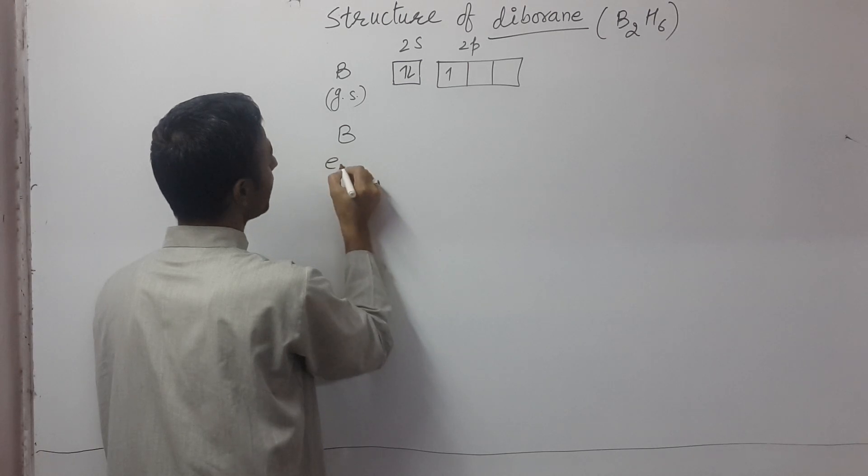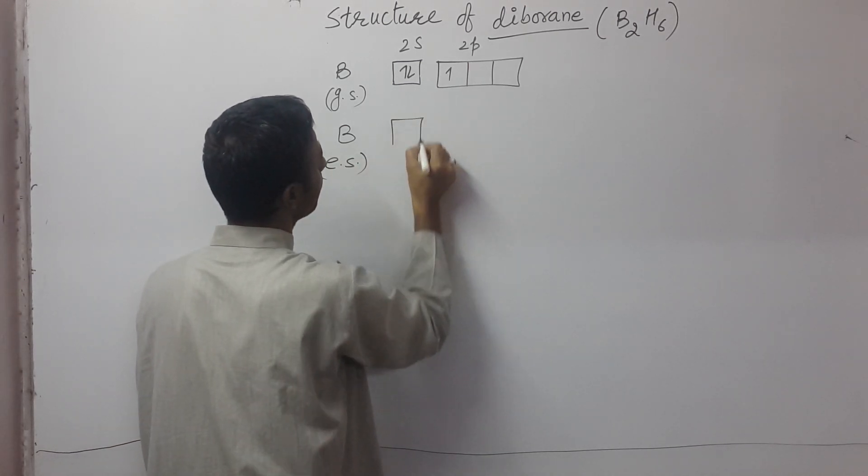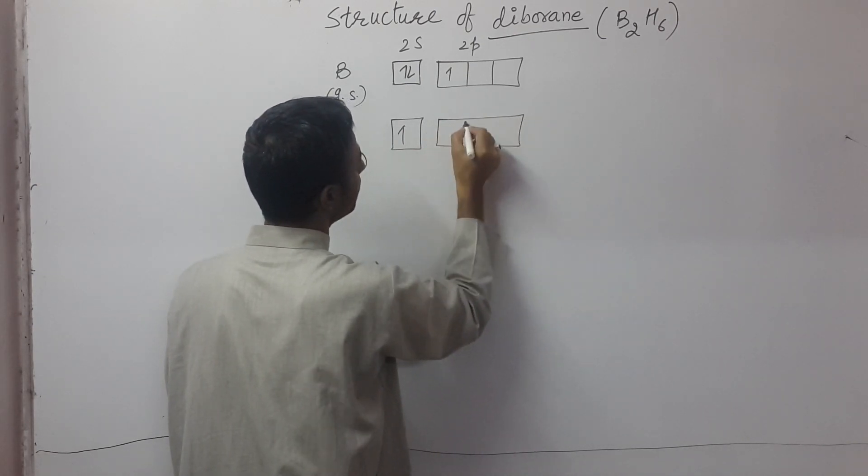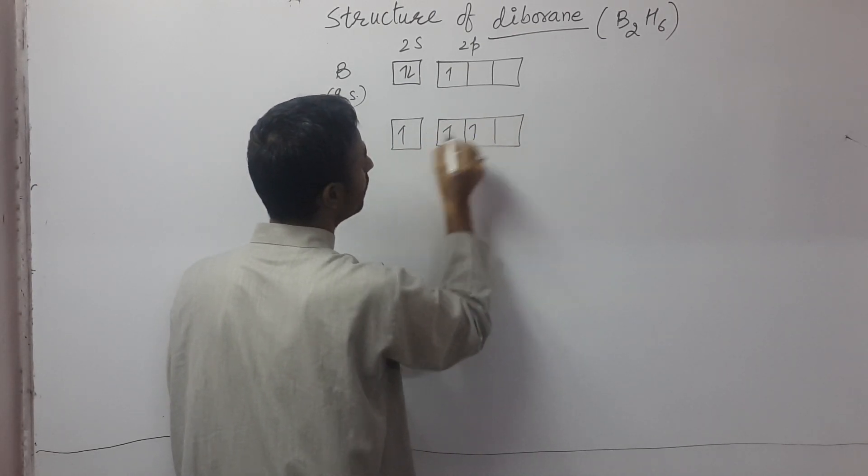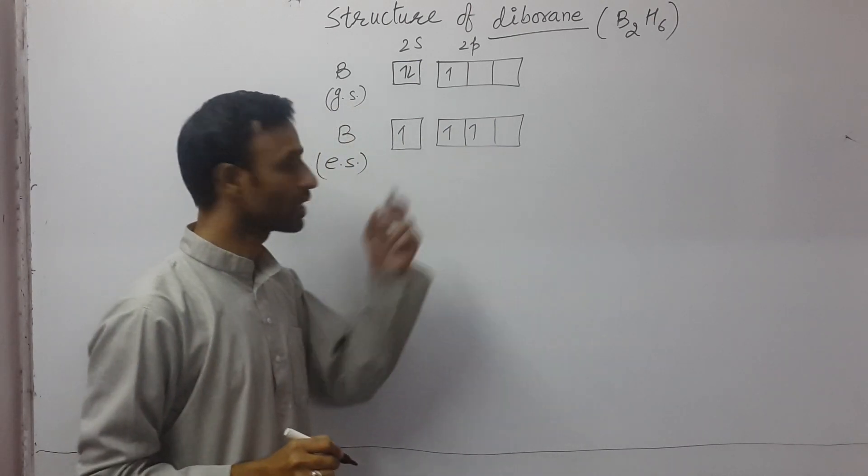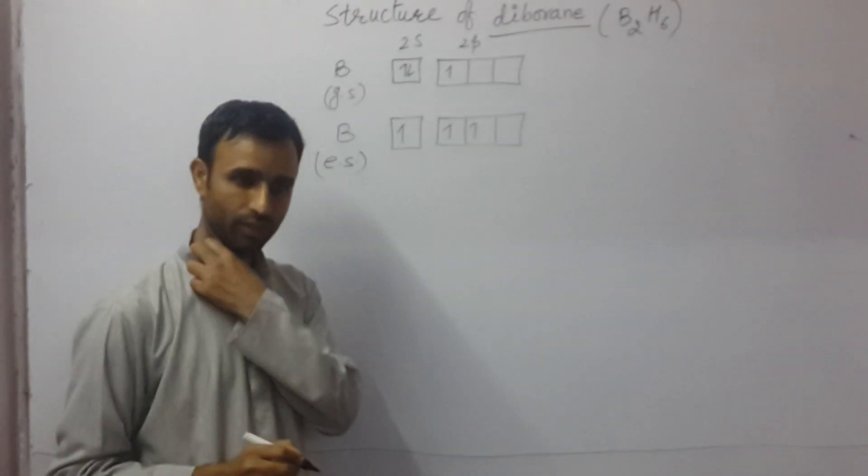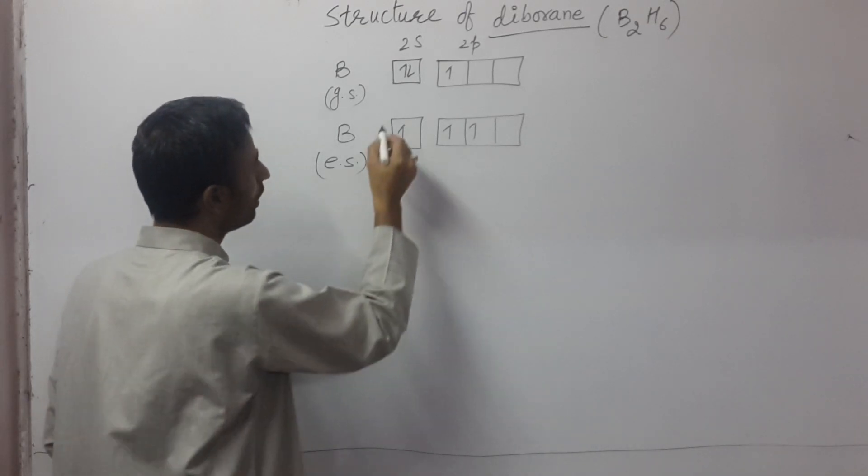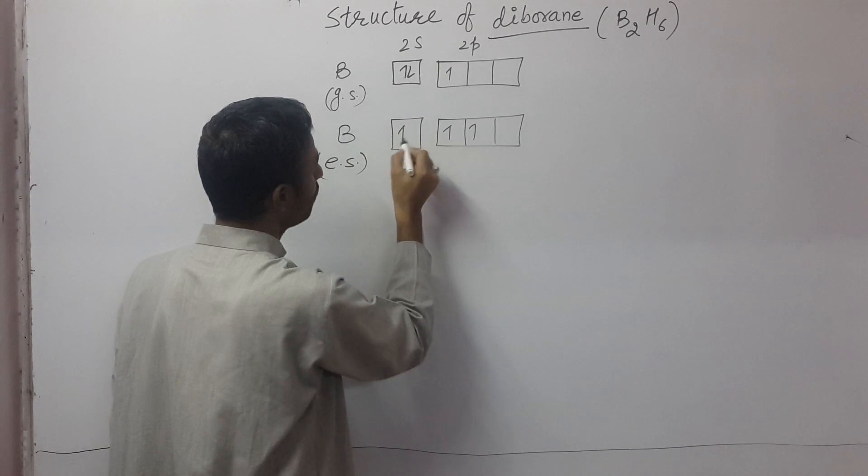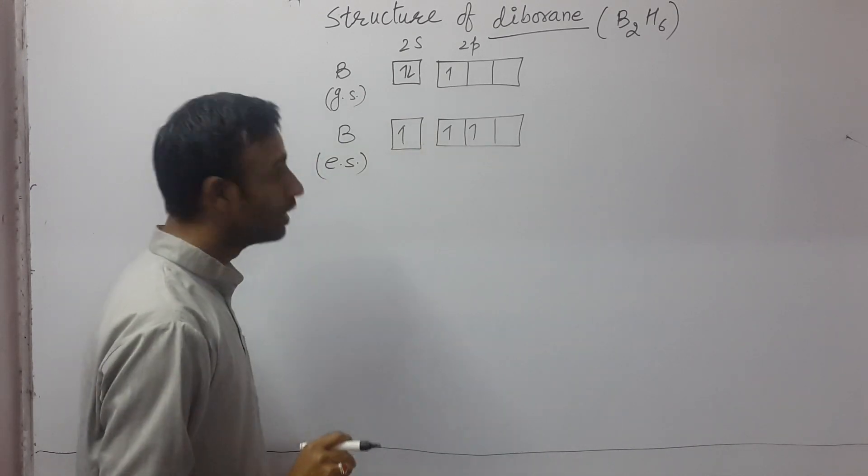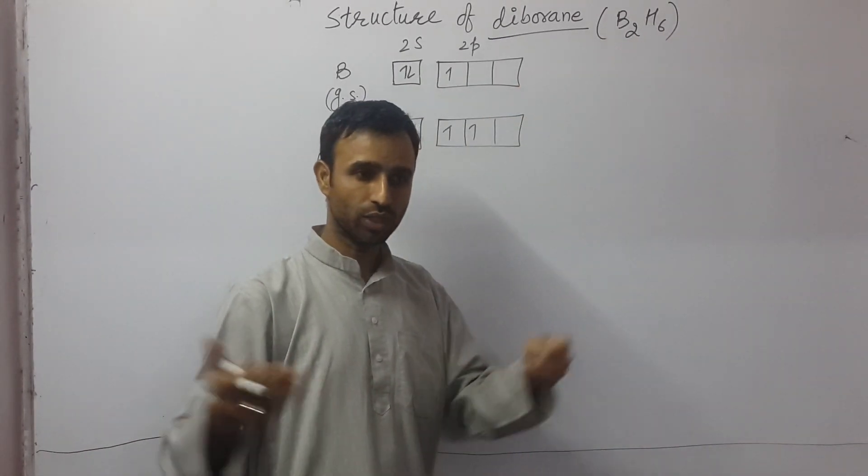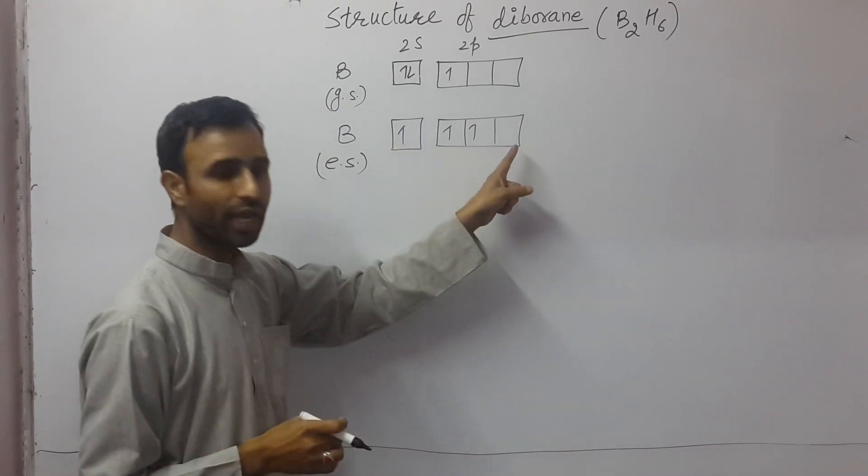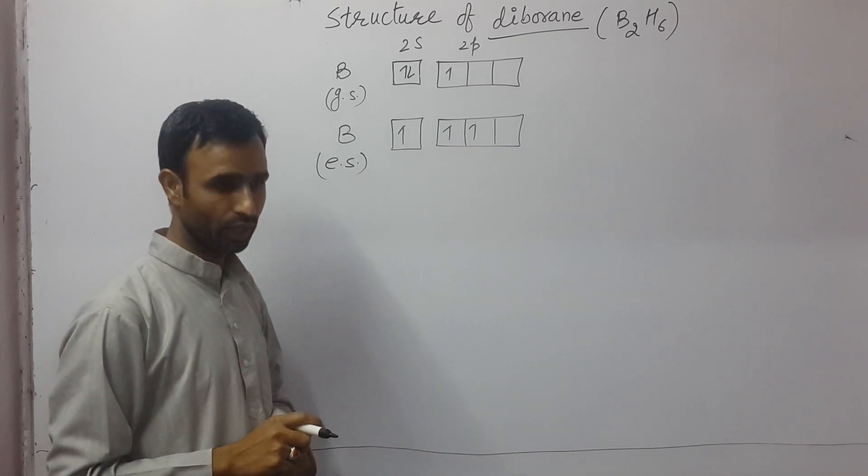Now, in excited state, one of the electrons from 2s is shifted to 2p. Now how many valence electrons are there? Three. So it can form three normal bonds. But if we form three normal boron bonds, diborane is not satisfied. There is no bond between two boron atoms. That means this vacant orbital is also involved in bonding.